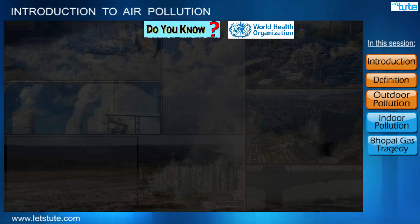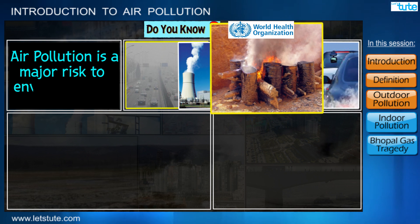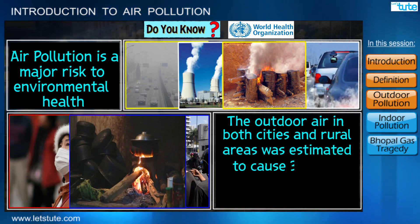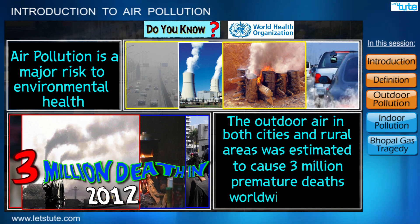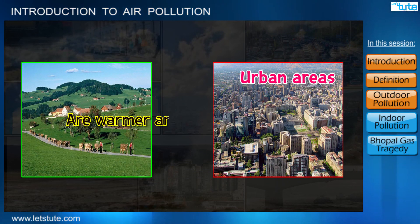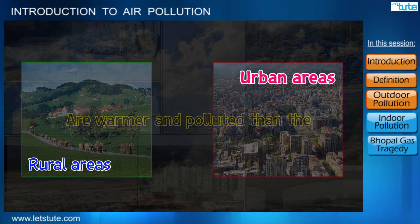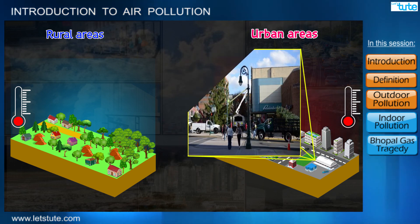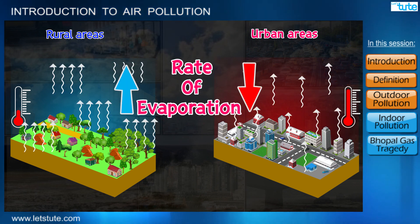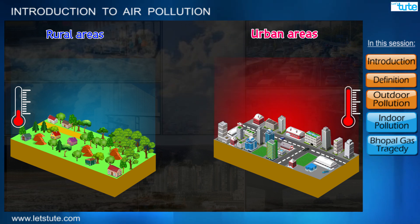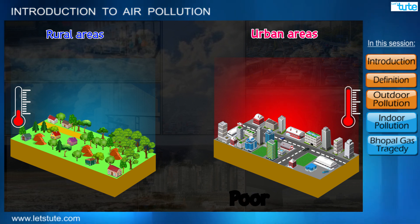According to the World Health Organization, air pollution is a major risk to environmental health. Outdoor air in both cities and rural areas was estimated to cause 3 million premature deaths worldwide in 2012. The crowded urban areas, especially the business districts, are warmer and more polluted than rural areas. The infrastructure — tall dark buildings, roads, and poor vegetation — absorbs a lot of heat. The rate of evaporation is also low, and waste heat is emitted from vehicles, air conditioners, and generators, resulting in the formation of heat islands. These areas have poor air quality.